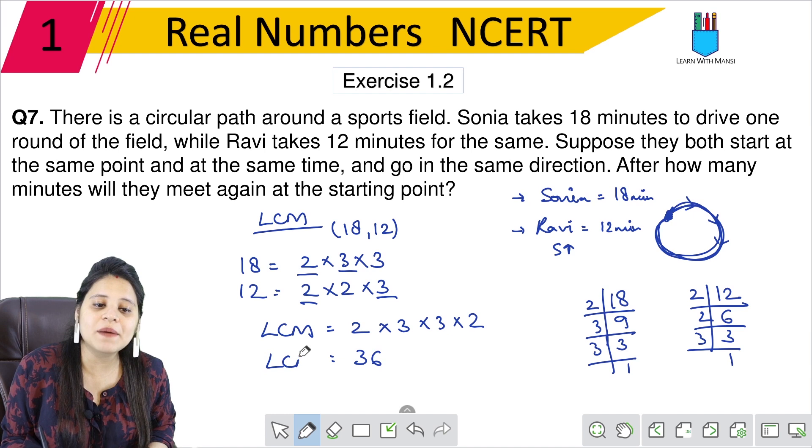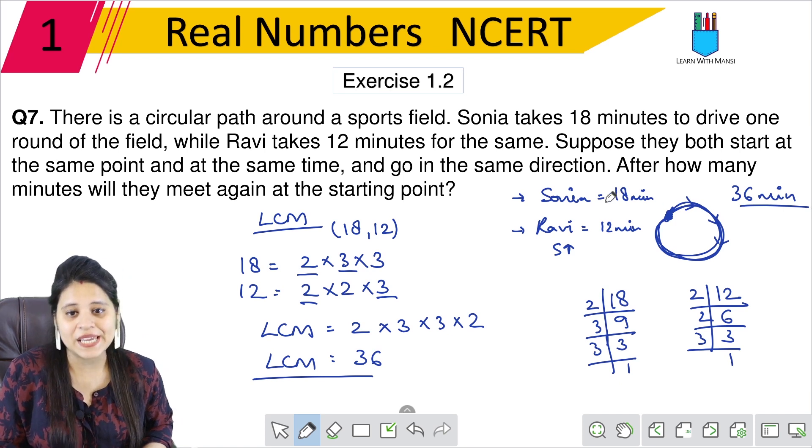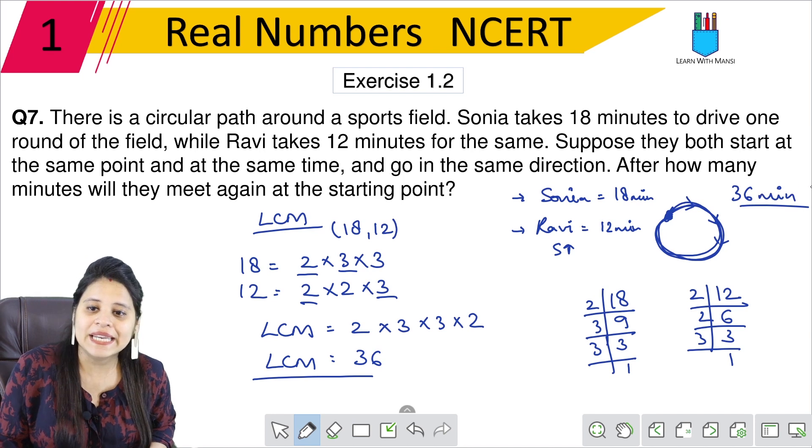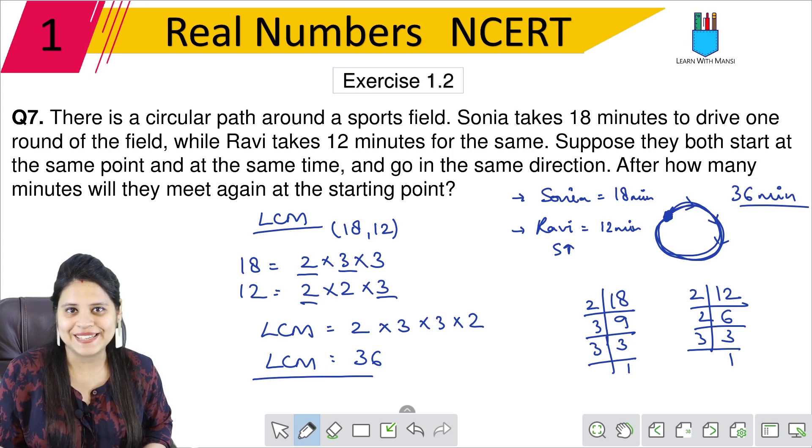Therefore, LCM is 36. So after 36 minutes, they will meet at the starting point. We will find Sonia and Ravi at the same point. After 36 minutes, they will meet at the same point.